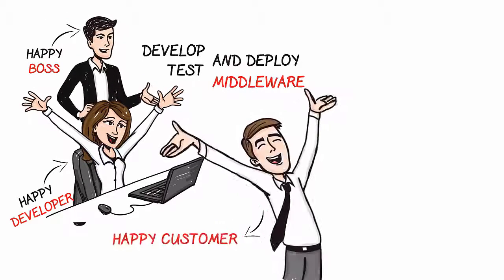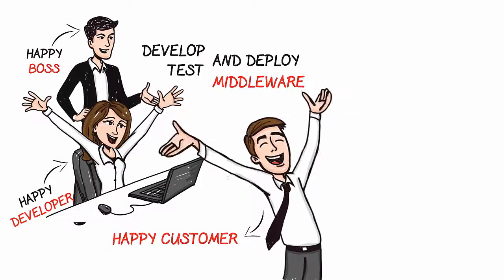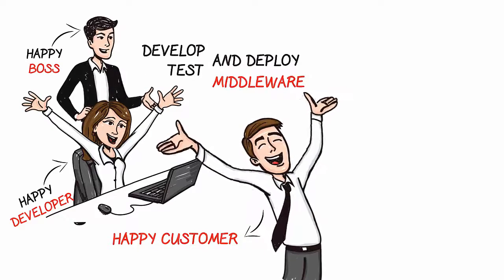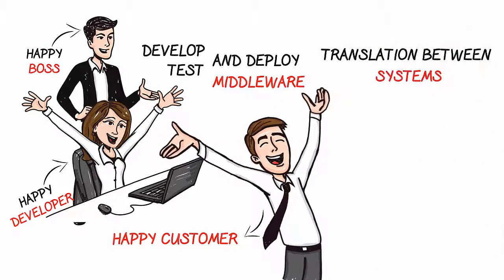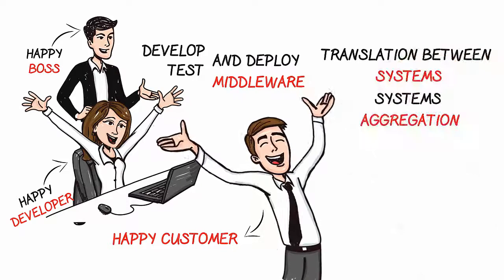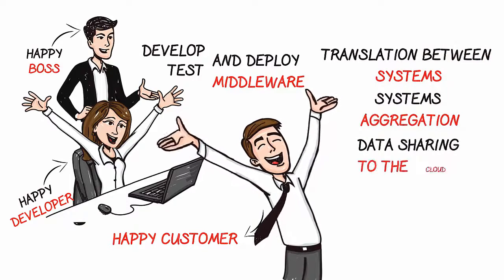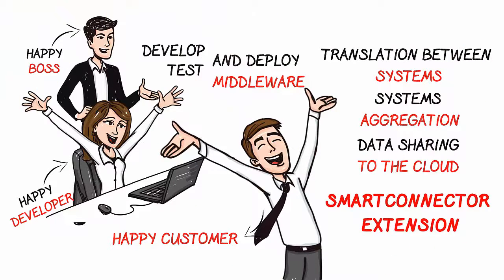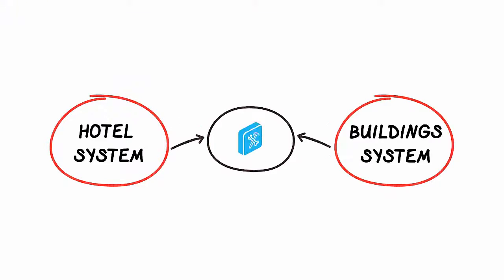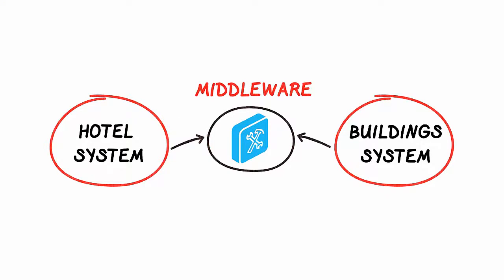Smart Connector simplifies integrations that were once not possible without a significant amount of work. Translation between systems, systems aggregation, and data sharing to the cloud are all examples. We call this a Smart Connector extension. These Smart Connector extensions are built from the Smart Connector framework. Once deployed and configured, these extensions run completely unattended.